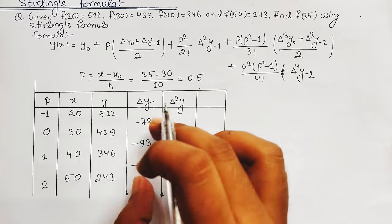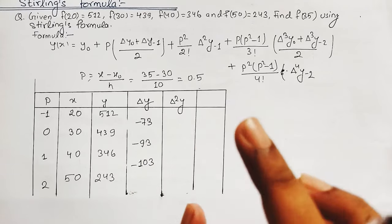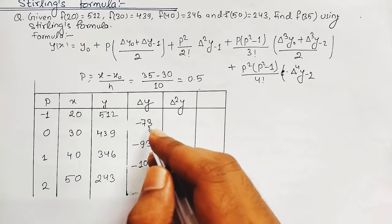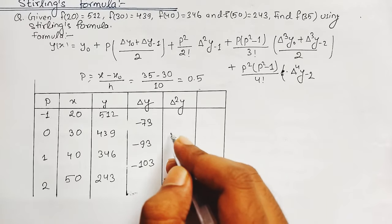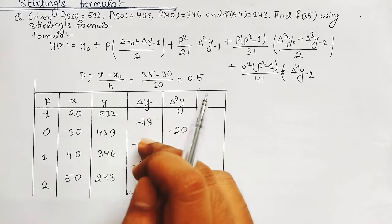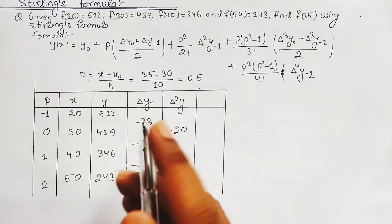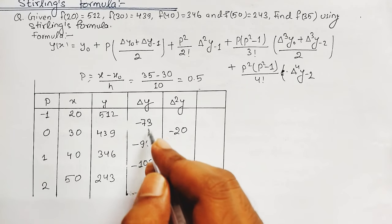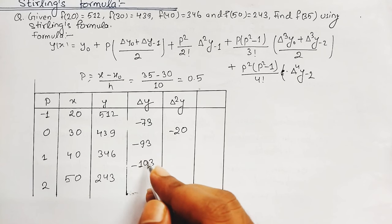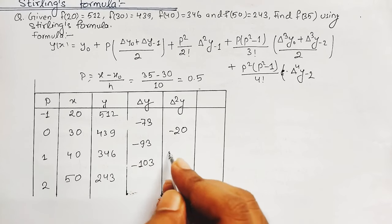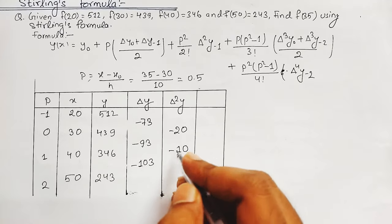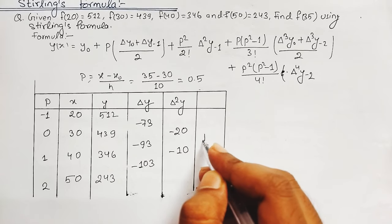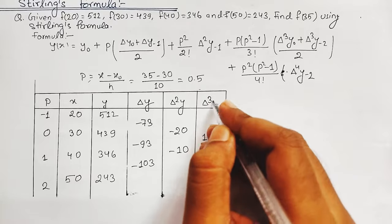Subtracting −73 from −93 gives Δ²y₋₁ = −20, and subtracting −93 from −103 gives Δ²y₀ = −10. We write each in the middle of the two preceding values. Once again subtracting: −20 minus −10 gives Δ³y₋₁ = positive 10. This is the delta cubed y column. Looking at the formula, we have computed all values needed to calculate F(35).